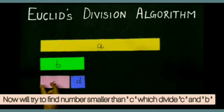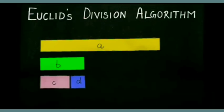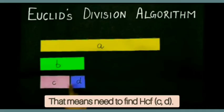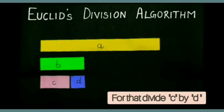We have to find number smaller than C which divides B and C completely. That means need to find HCF of C and D. For that, divide C by D.